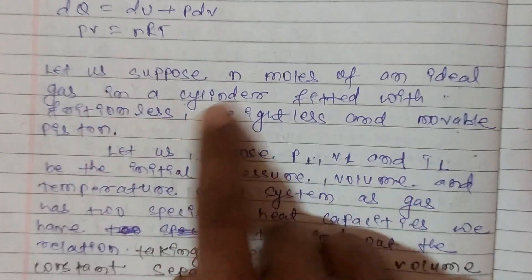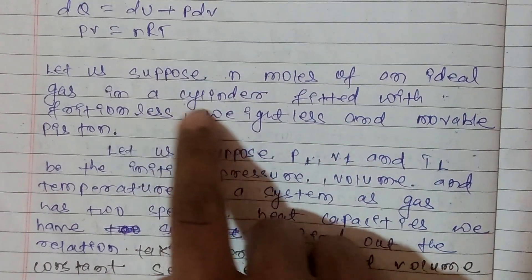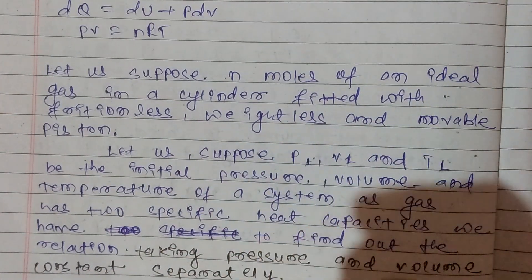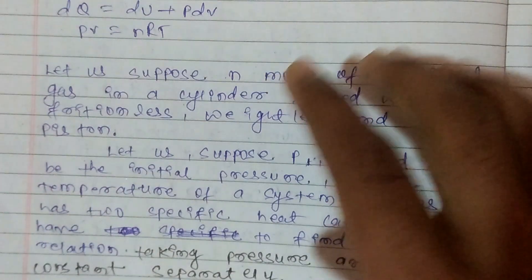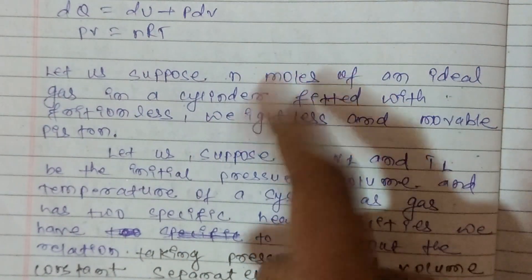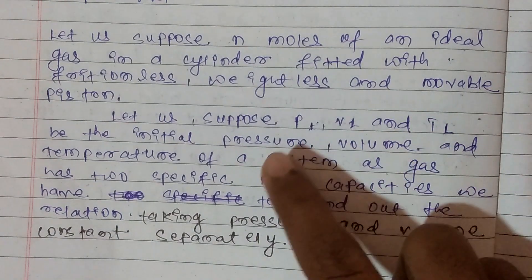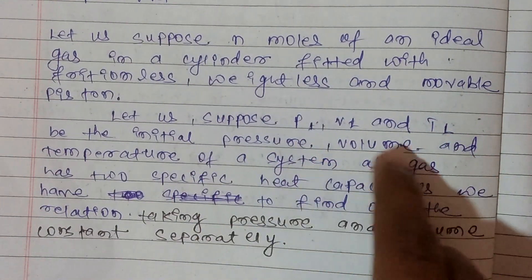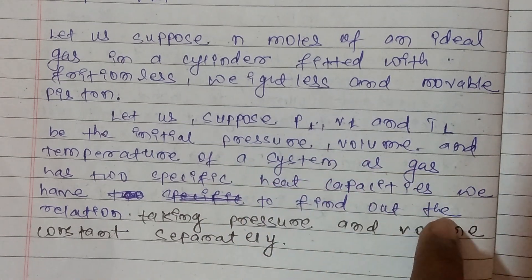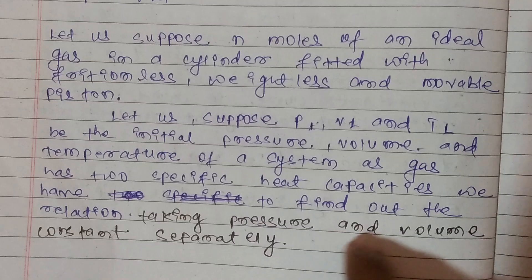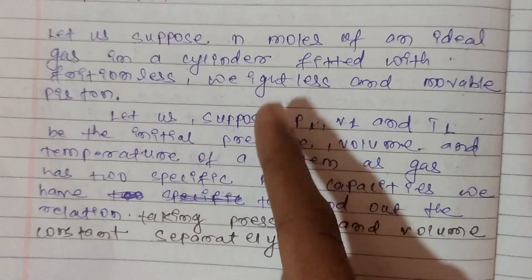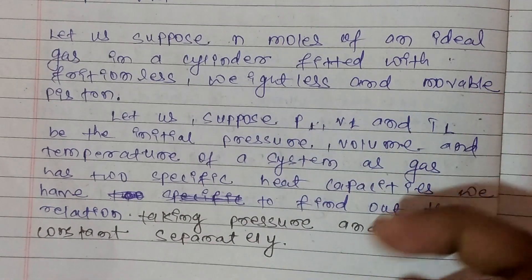Let us suppose N moles of an ideal gas in a cylinder fitted with a frictionless, weightless, and movable piston. Let P1, V1, and T1 be the initial pressure, volume, and temperature of the system. As the gas has two specific heat capacities, we have to find out the relation taking pressure and volume constant separately.